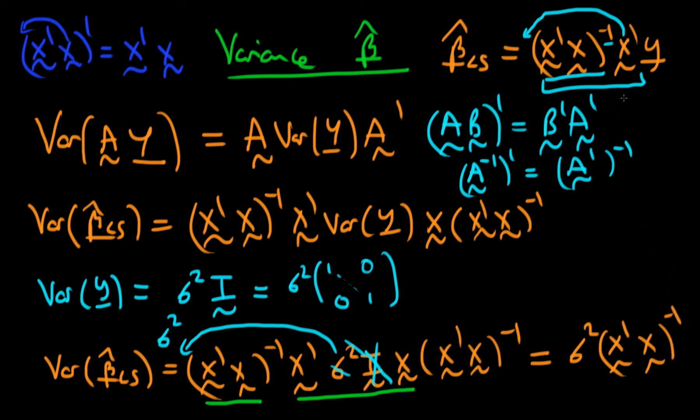That is the expression for the variance of the least squares estimator under the assumption of no serial correlation of errors and homoscedastic errors. In the next video we are going to start to prove the Gauss-Markov theorem in matrix form. I'll see you then.